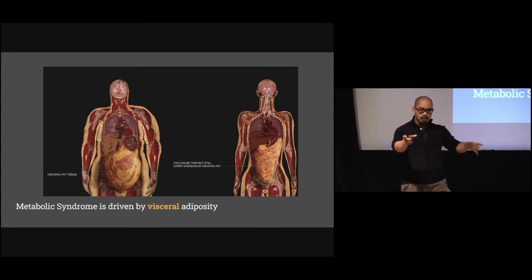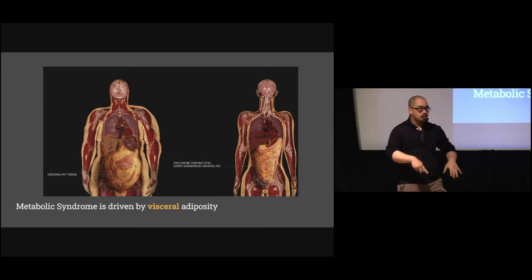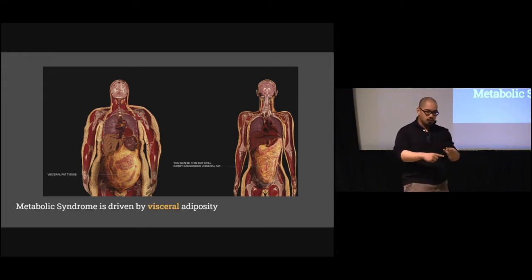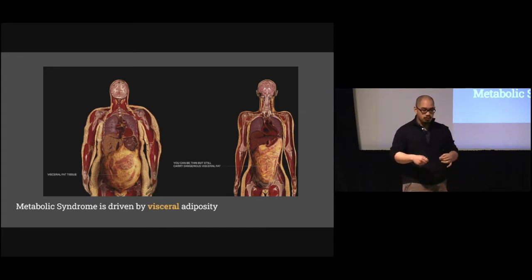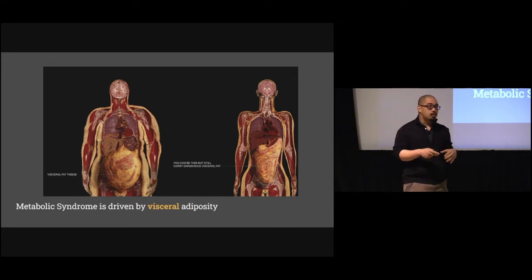That NAFLD turns to NASH, that NASH turns to cirrhosis. What happens if it happens in a kidney, a pancreas, et cetera? This drives a lot of the common variants of obesity, diabetes, hypertension, dyslipidemia. It's not a disease in the formal sense — it's the body's adaptive, now maladaptive, process to just being too overfed or too underactive.